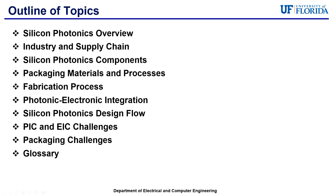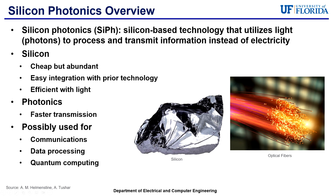Beginning with an overview of Silicon Photonics: Silicon Photonics, or SiP for shorthand, are silicon-based technologies that utilize light in the form of photons to process and transmit information instead of electricity, which is what electronics currently utilize. The first half of Silicon Photonics is silicon — a cheap but abundant metalloid that can be easily integrated with current and prior technology, as it is a semiconductor material used very commonly in today's technologies. The second half is photonics, which is a light-based technology that can prove to have faster transmission of data in comparison to electronics, as photons travel much faster at the speed of light than the speed of electrons, which are heavily affected by the medium.